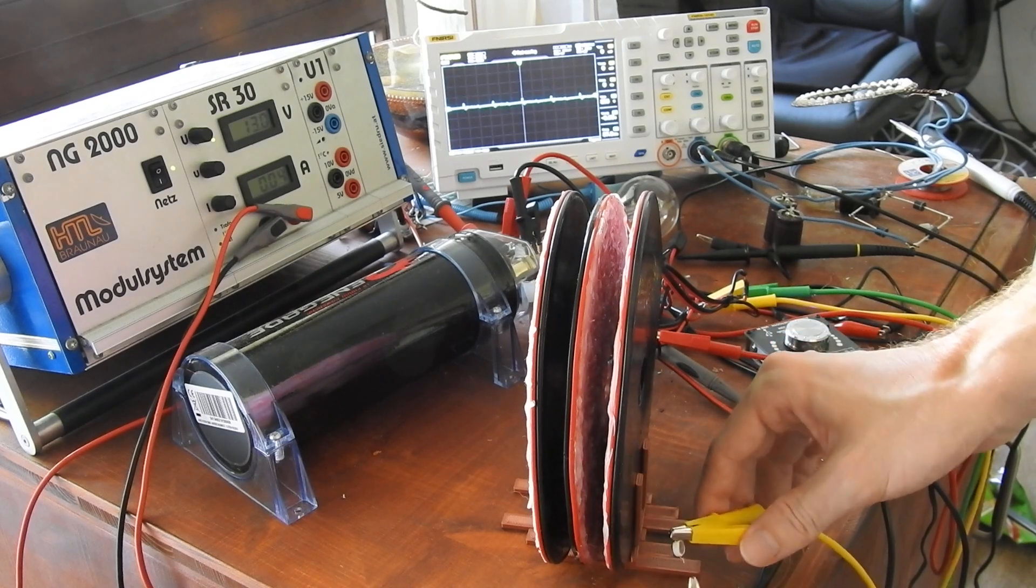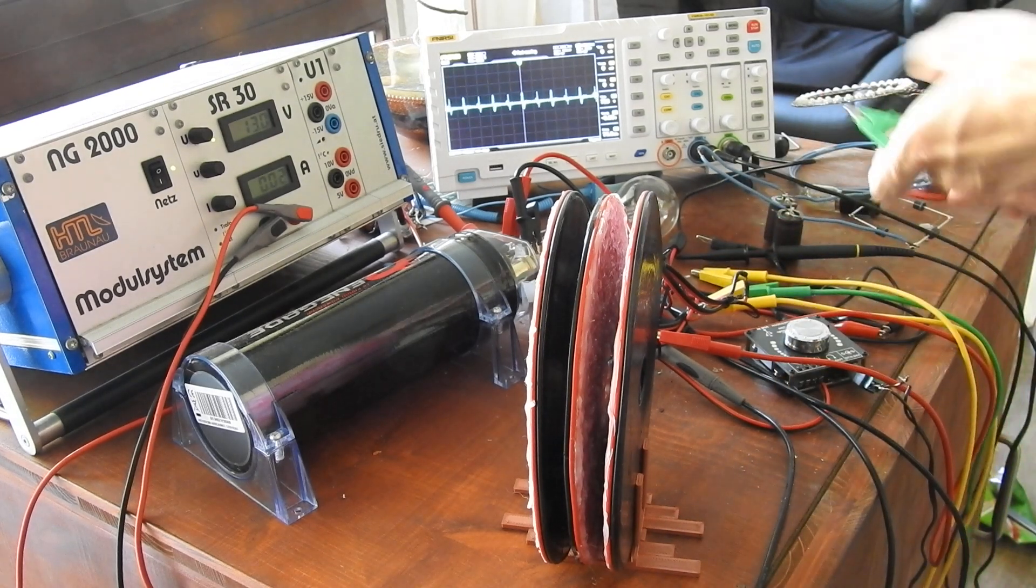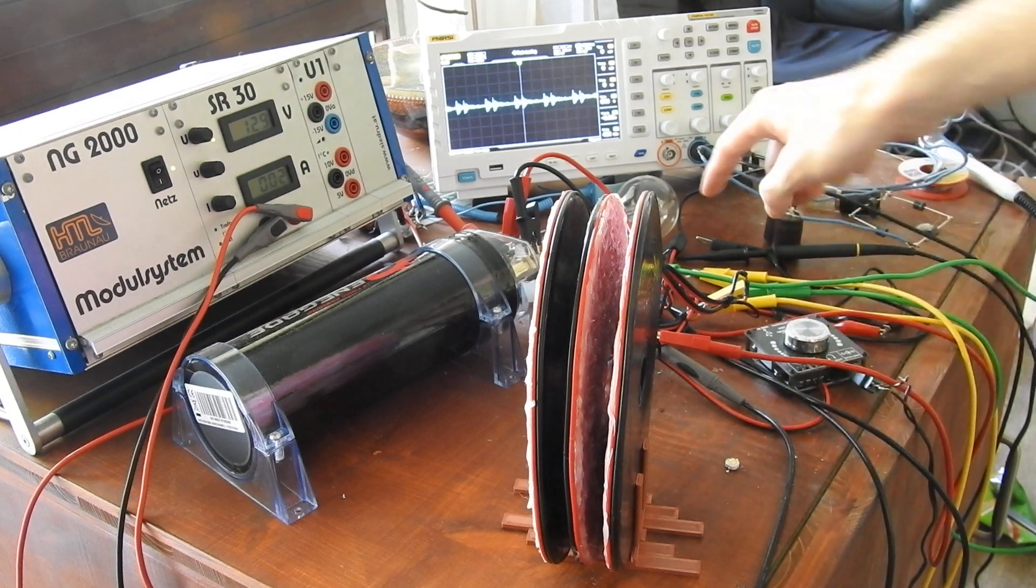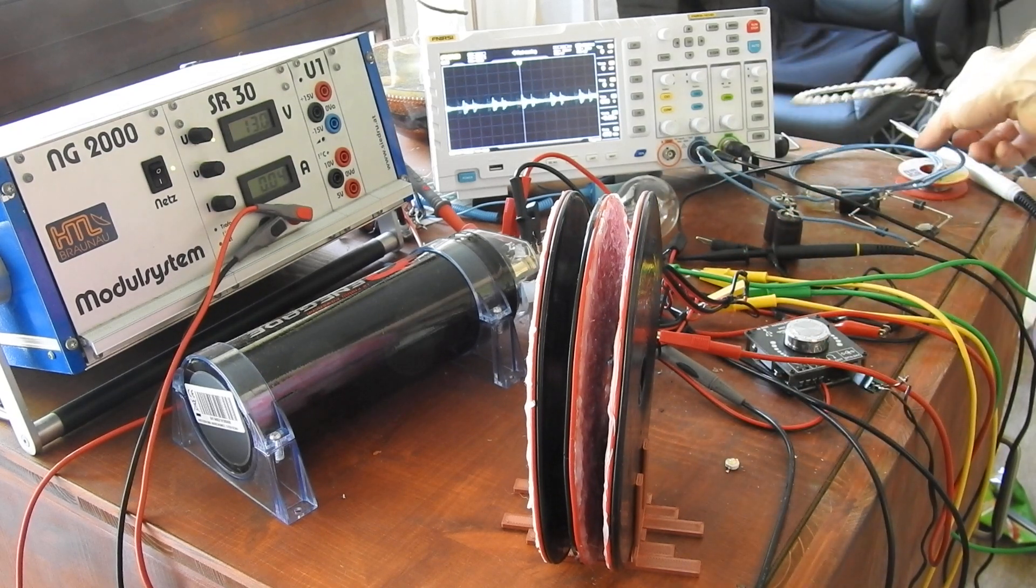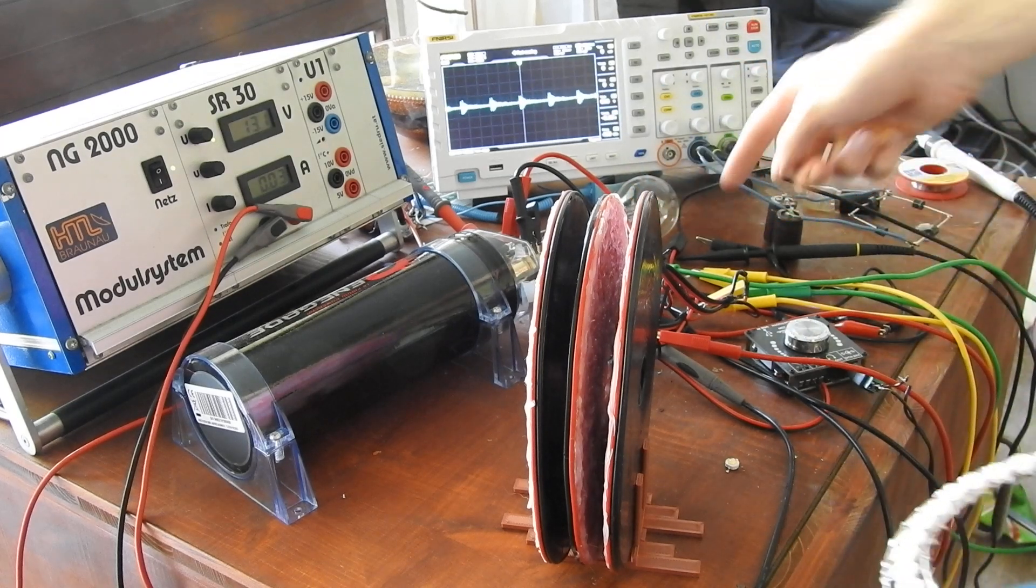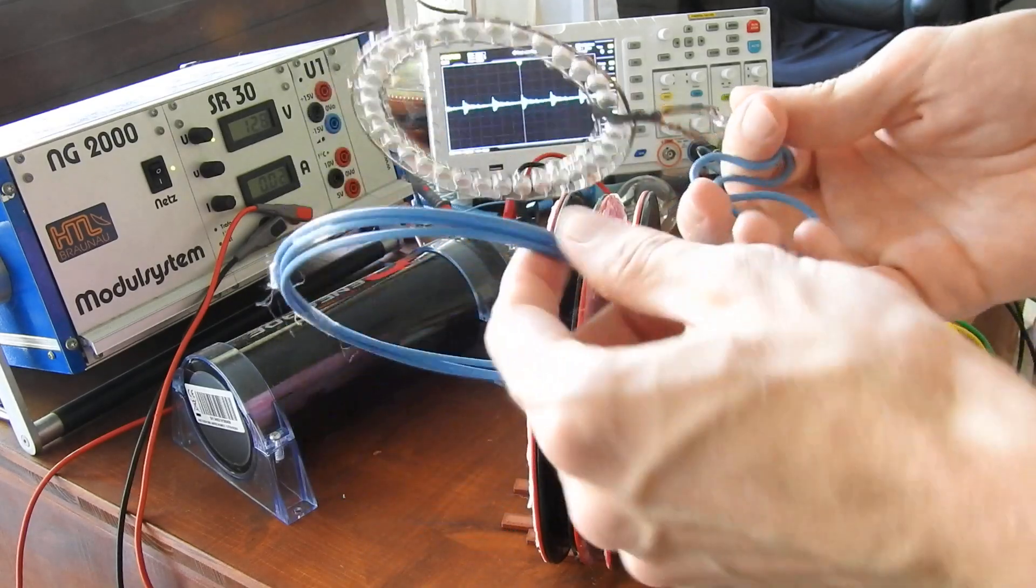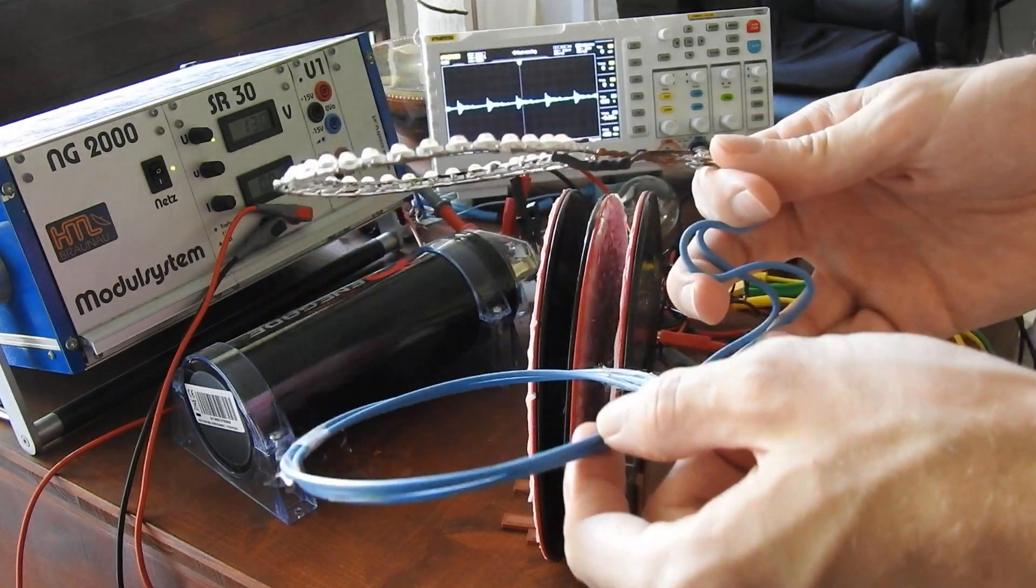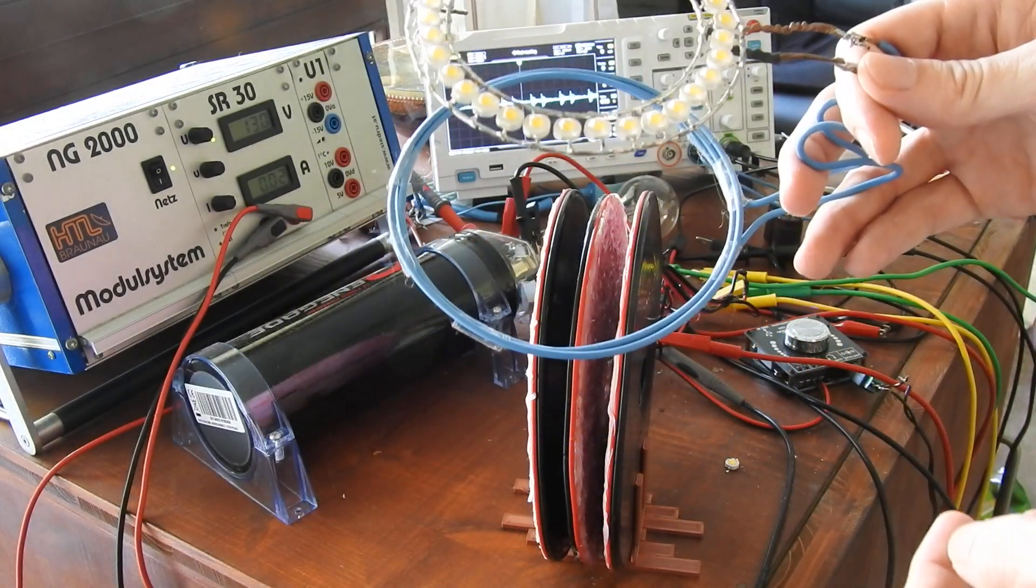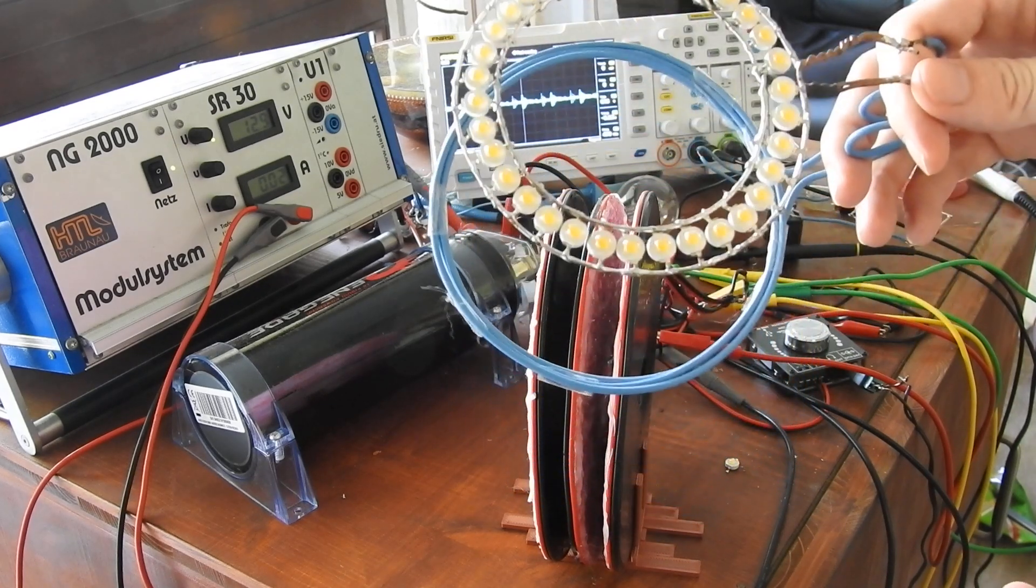And I have also got another field viewer. For this I don't need the connections from my coils. So they are not connected anymore. I just leave them here. And what I have here is my LED ring with a copper coil connected like you saw in the last videos. And this is also a quite good tool to visualize the field.